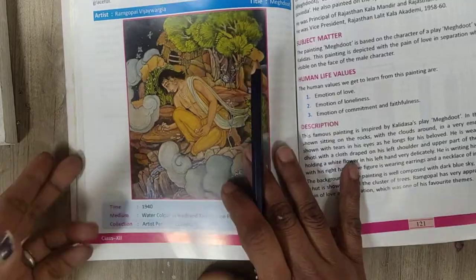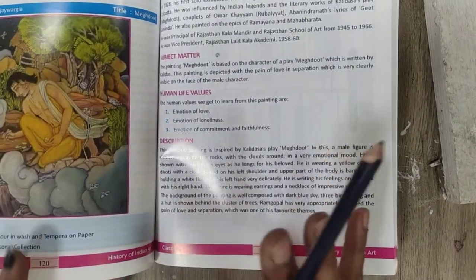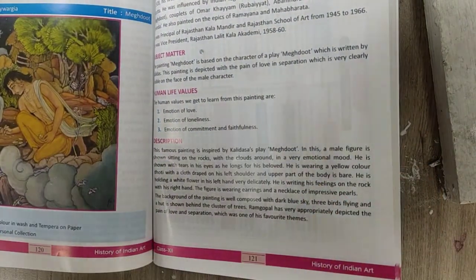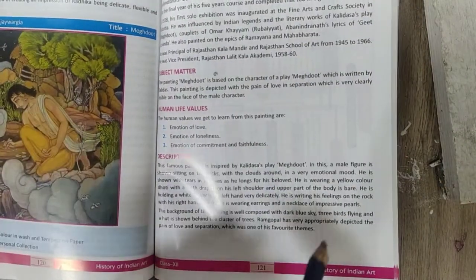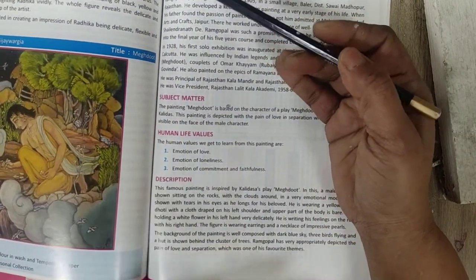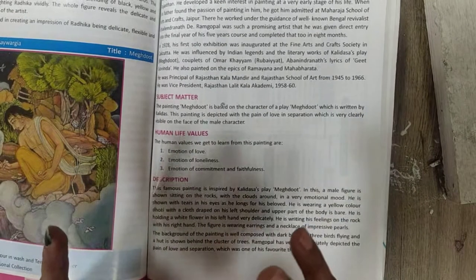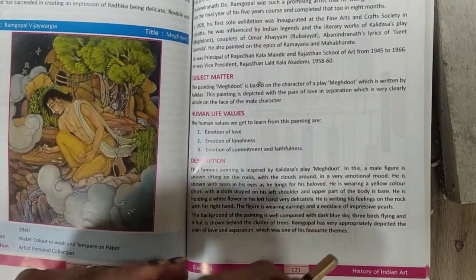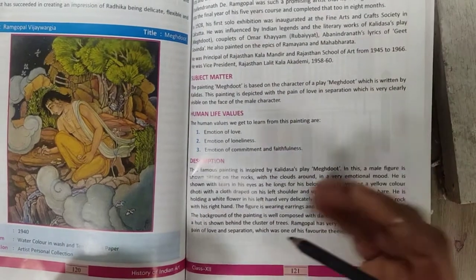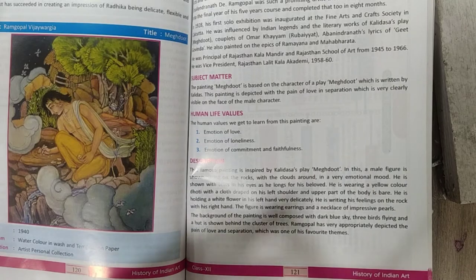For reference books, the SPA History of Indian Art is recommended, or any panoramic book. When answering painting questions, always describe two or three things: the artist, subject matter, human life values, and a description. For Ram Gopal Vijayvargia, focus on describing his color scheme and skills in two or three lines.